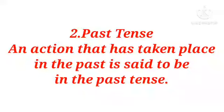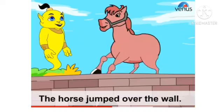The second one is past tense. An action that has taken place in the past is said to be in the past tense. For example: the horse jumped over the wall. In this sentence, the action 'jumped' took place in the past tense.